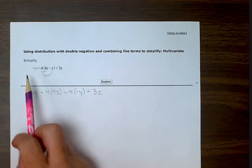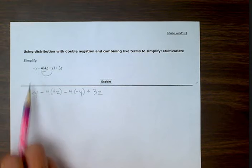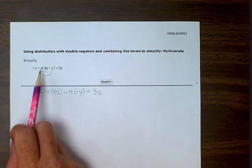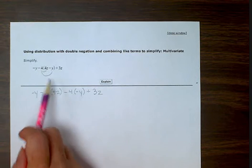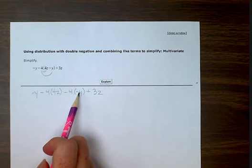So now we have minus y, minus 4 times 4z, minus 4 times minus y, plus 3z.